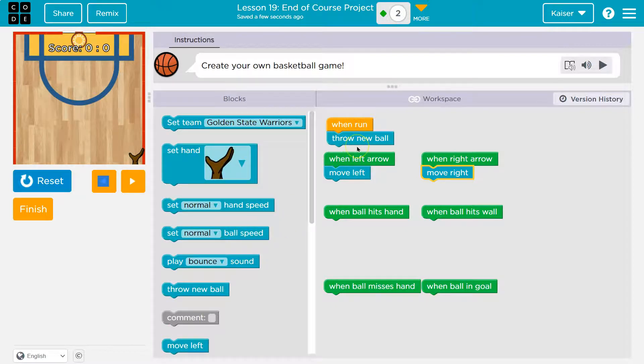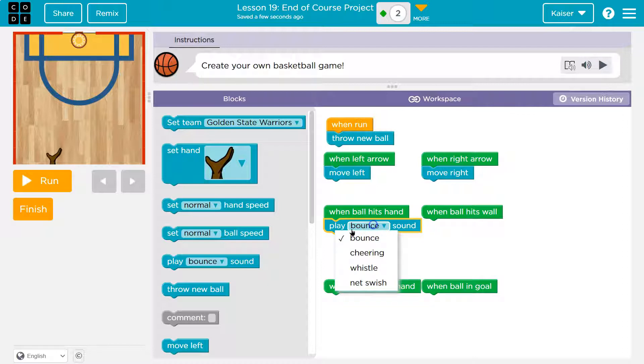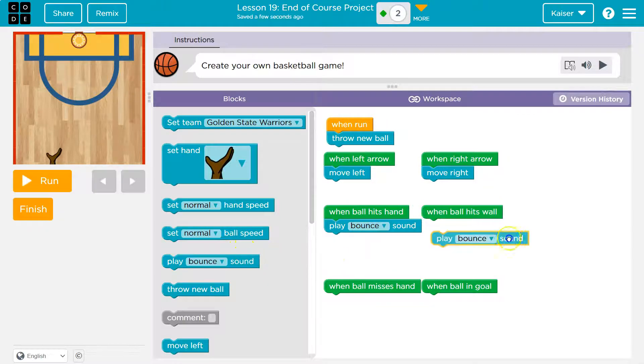Throw a new ball. Oh, so the ball just goes through my hand. So, when the ball hits the hand, what do I want it to do? Sure, I'll have it play. Do I have to play it in that? Should I bounce? Yeah. What other sounds do I got? Yeah, we'll do a bounce sound, I guess, off my hand.